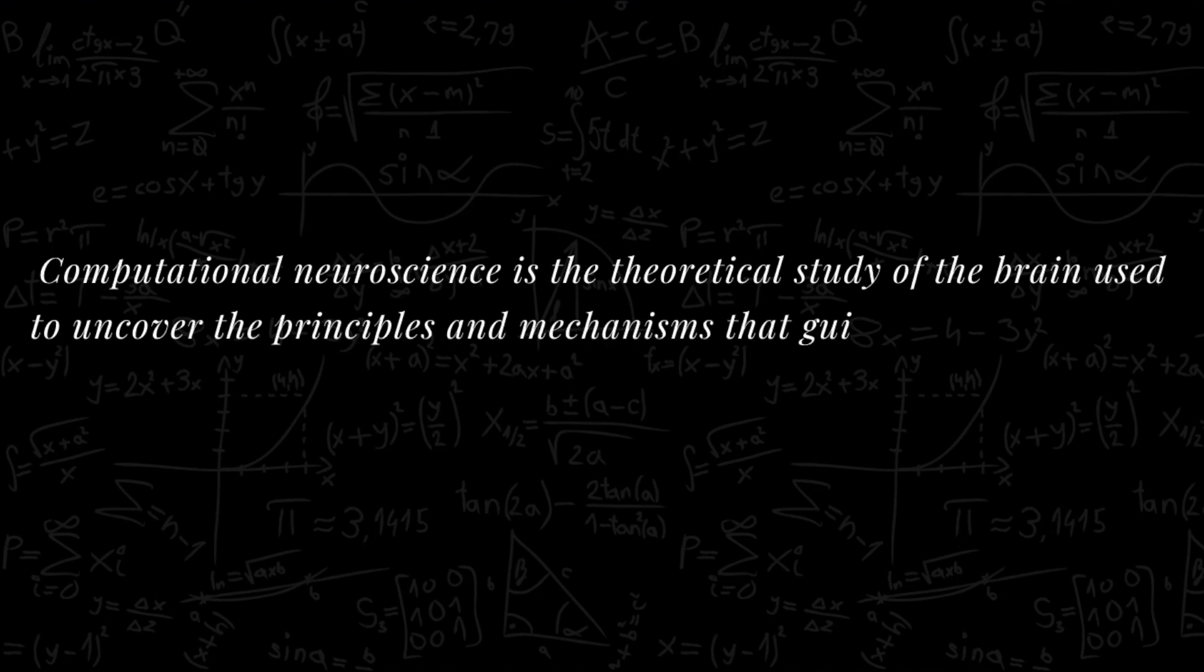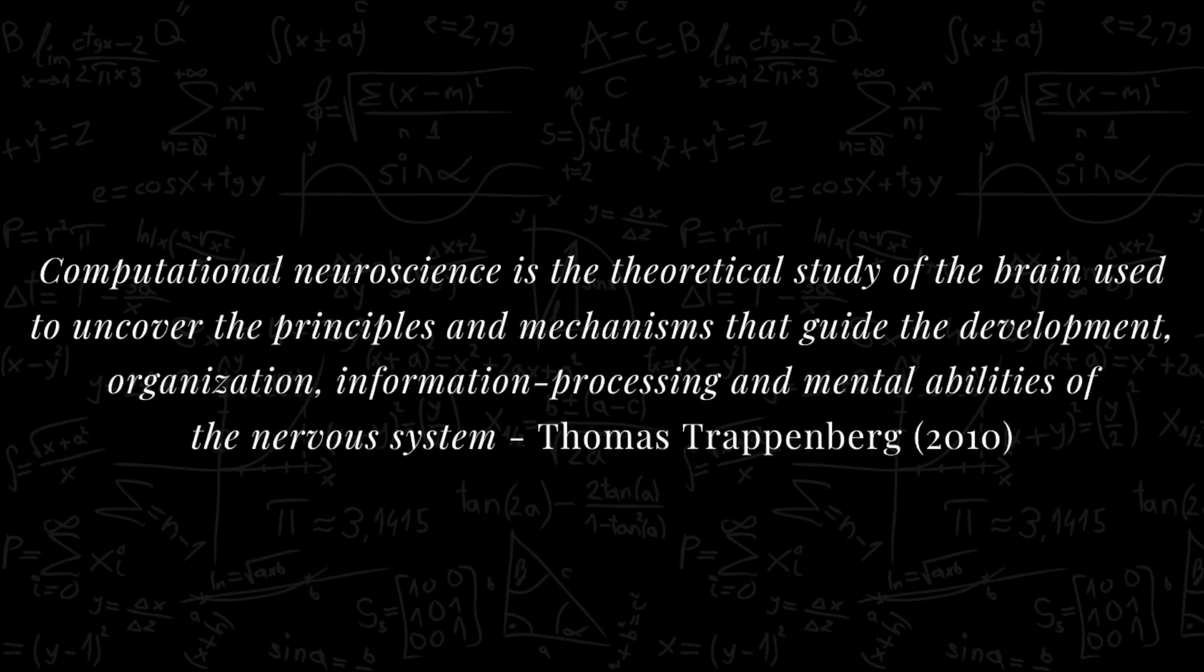In his book The Fundamentals of Computational Neuroscience, researcher Thomas Trappenberg defined computational neuroscience as the theoretical study of the brain used to uncover the principles and mechanisms guiding the development, organization, information processing and mental abilities of the nervous system.